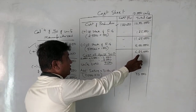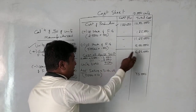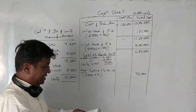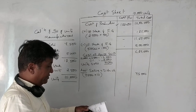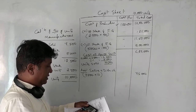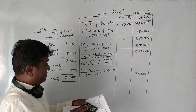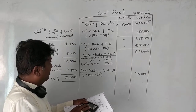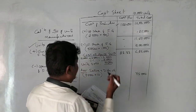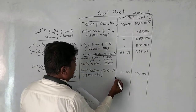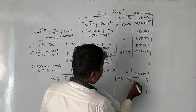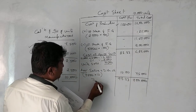Per unit: cost of goods sold 6,25,000 ÷ 7,500 units sold = 83.33 rupees per unit. Plus 10 rupees selling expenses per unit = 93.33 rupees per unit. Total cost is 7,00,000 rupees (7 lakhs).